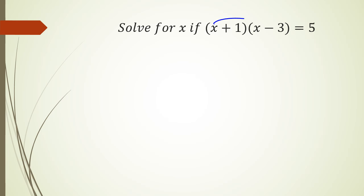All right, so expanding it, I've got x times x, which is x squared, x times negative 3 is negative 3x, 1 times x is 1x, and finally, 1 times negative 3 is negative 3. And all this is equal to positive 5.